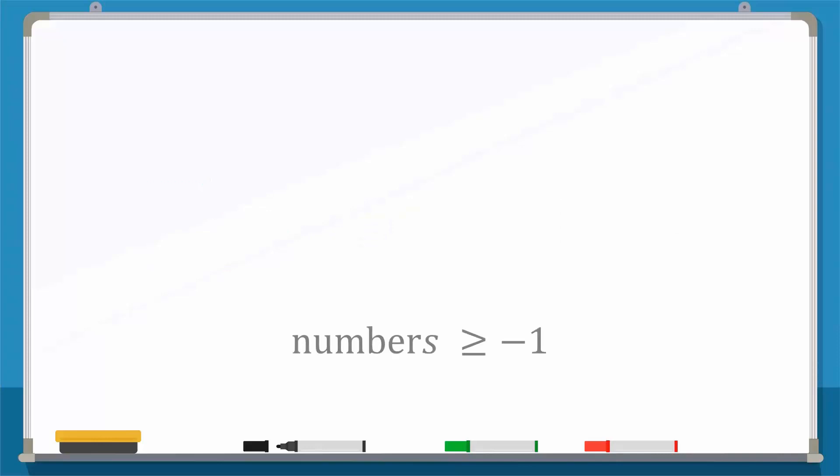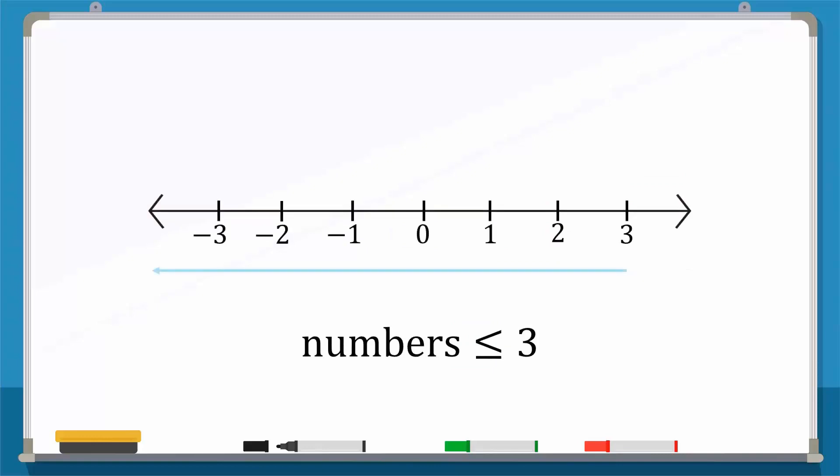For numbers greater than or equal to minus 1, we will put a dot on minus 1, and then we move towards the right side marking each number. And if we want to know which numbers are less than or equal to 3, we first mark 3, and then we move towards the left.